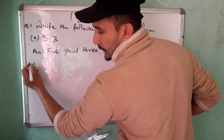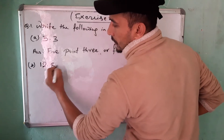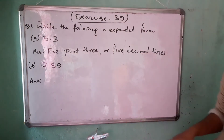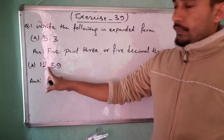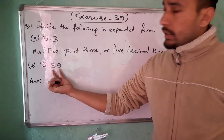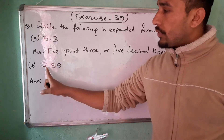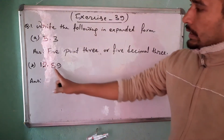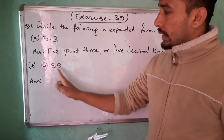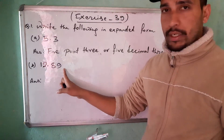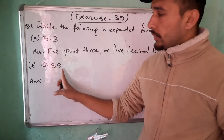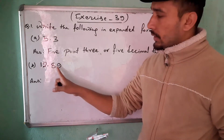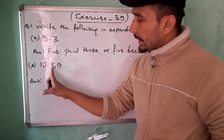Number B is 12.89. After the decimal point, you have to read the digits individually — 8 and 9. Don't say 89. You have to read 8 and 9 separately.